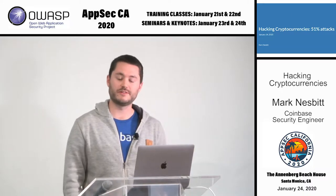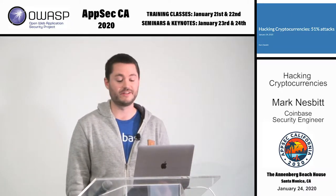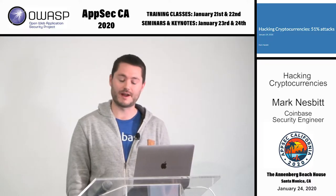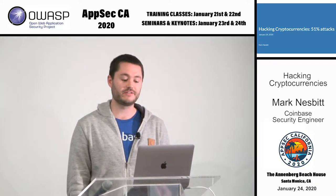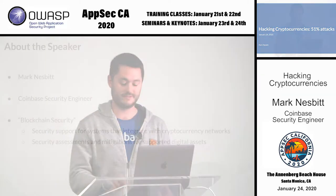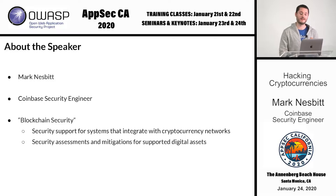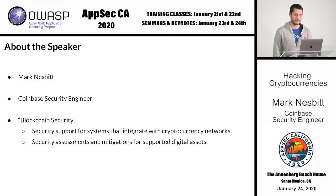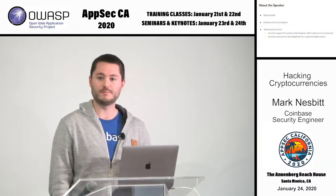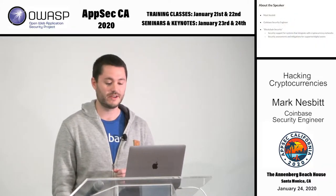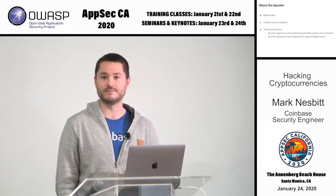Welcome, everybody. Today I'm going to talk about a certain type of attack against cryptocurrencies: the 51% attack. Rather than making money by stealing the private keys of a particular owner of cryptocurrency, this attack undermines the integrity of the currency itself. My name is Mark Nesbitt. I'm an engineer at Coinbase, a digital currency wallet and platform where merchants and consumers can transact with new digital currencies like Bitcoin and Ethereum. The focus of my work is blockchain security — security support for systems that integrate with cryptocurrency networks and security assessments and mitigations for supported digital assets. Blockchain security is a part of the AppSec team at Coinbase; you can think of it as traditional AppSec applied to the domain of blockchains.